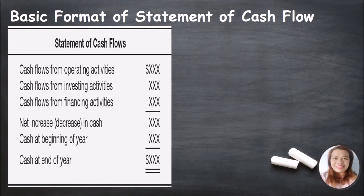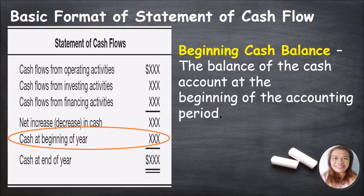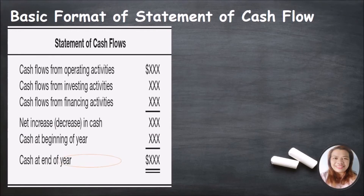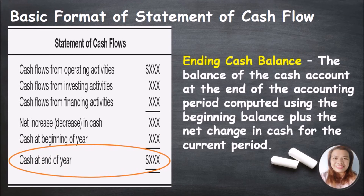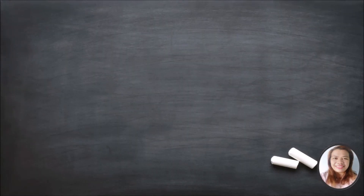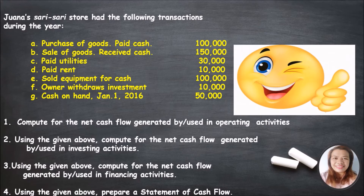The cash at beginning of the year, or beginning cash balance, is the balance of the cash account at the beginning of the accounting period. The cash at end of the year, or ending cash balance, is the balance of the cash account at the end of the accounting period, computed using the beginning balance plus the net change in cash for the current period.